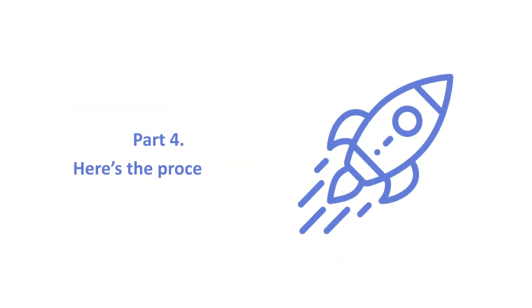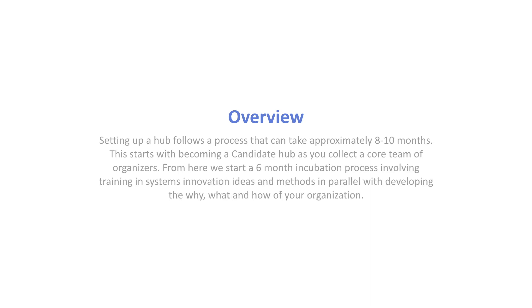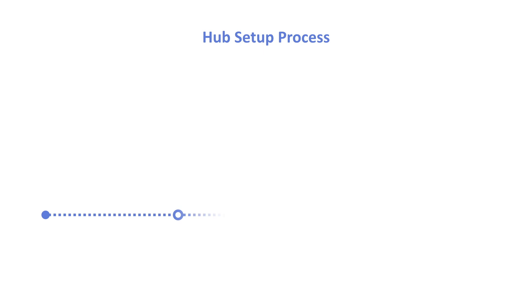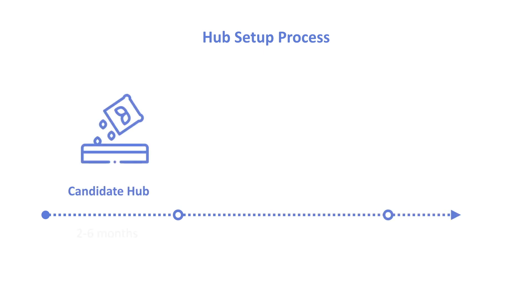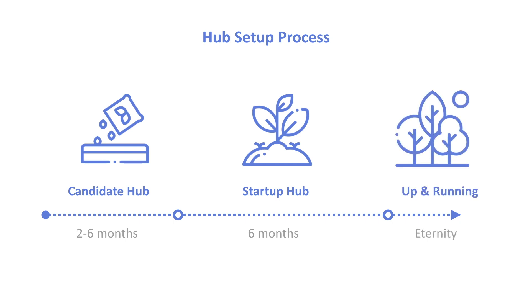Let's talk about what it takes to set up a hub. Setting up a hub follows a process that can take approximately eight to ten months — it doesn't happen overnight. It starts with becoming a candidate hub as you collect a core team of organizers. From here, we start a six-month incubation period involving training in systems innovation ideas and methods, in parallel with developing the why, what, and how of your organization. The timeline: candidate hub first, taking two to six months, then incubation as a startup hub for about six months — then you're up and running.